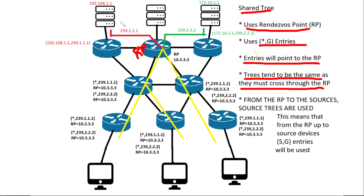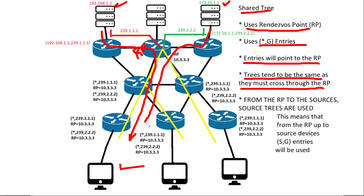So for instance, in order for this source to reach this destination, the traffic will have to go this way. And this other source will use this path. So these trees tend to be the same up to the rendezvous point.